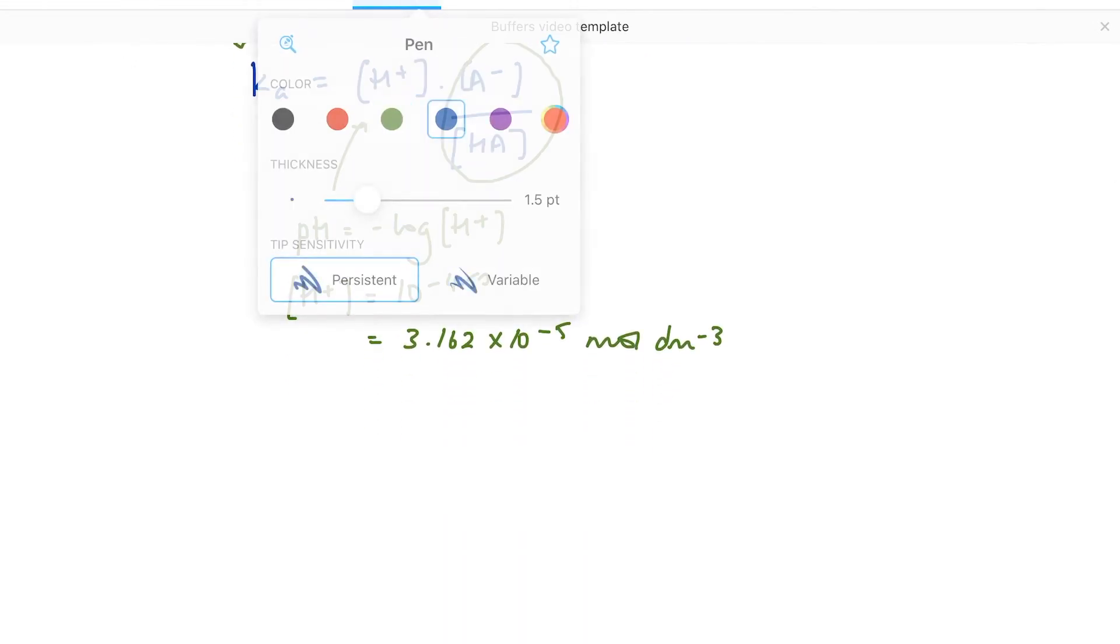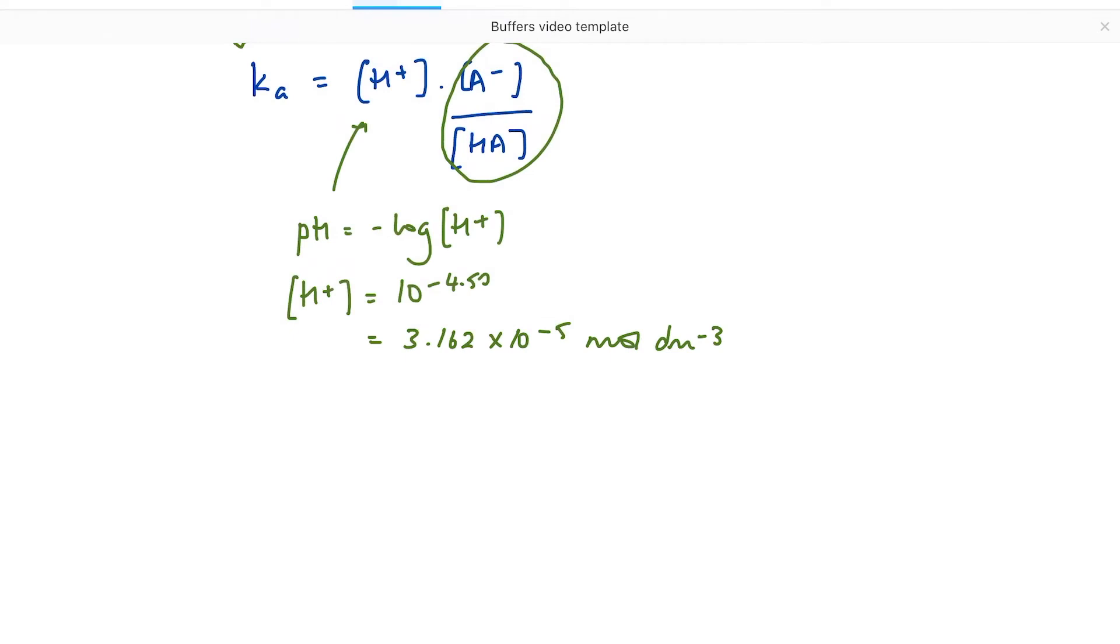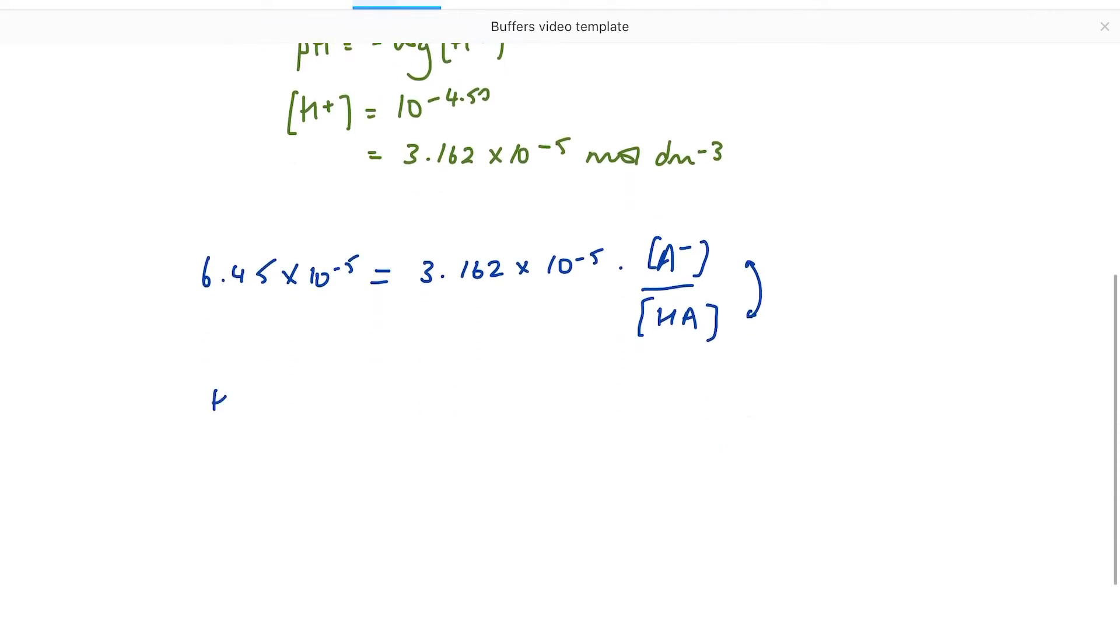Let me make that a little bit clearer. So what have I got at the moment? I have got 6.45 times 10 to the minus 5 is equal to the hydrogen ion concentration times A- over HA. Because I want my ratio the other way around, I'm going to flip my calculation at this point in time. For me, this is less confusing.